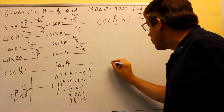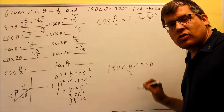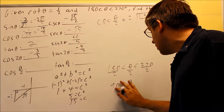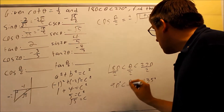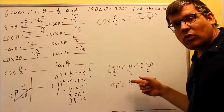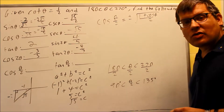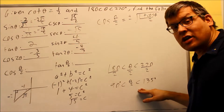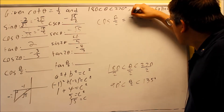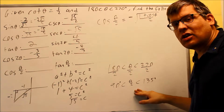To find the correct sign, determine which quadrant theta over 2 is in. Theta is between 180 and 270; dividing all parts by 2 gives 90 less than theta over 2 less than 135. So theta over 2 is in the second quadrant. Using the ASTC (all students take calculus) chart: in the second quadrant, sine is positive but cosine is negative. So we use the negative version of the formula.